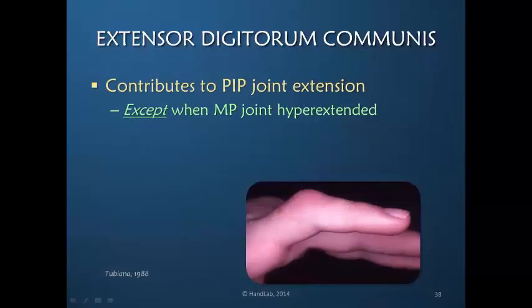In the normal finger, the extensor digitorum communis will contribute to interphalangeal joint extension once the MP joint is extended. But when there is resistance at the PIP joint, the MP joint becomes hyperextended, and the EDC is now all concentrated at the MP joint — it has no effect and cannot help at the PIP joint.